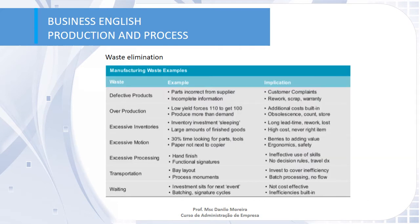Here you have an example of each one of the seven wastes and the implication of each. For example, products with defects — an example would be parts incorrect from suppliers or incomplete information. Their implications are rework, scrap, warranty, and customer complaints. Here you can read all of the other examples of wastes, or you can take a look at the slides and material I have posted for you.